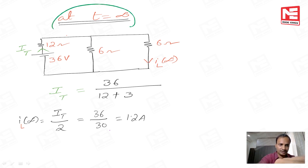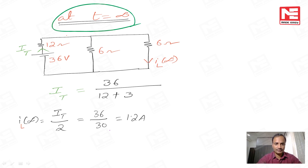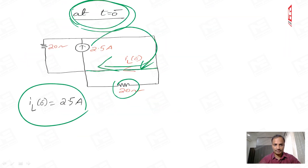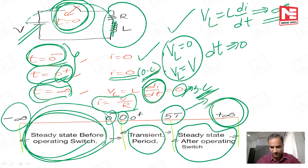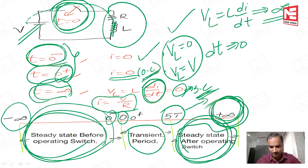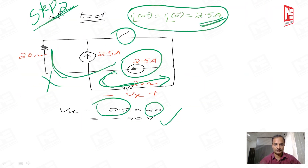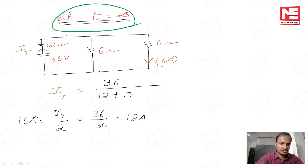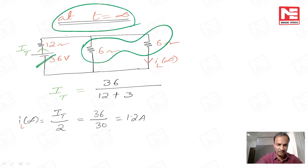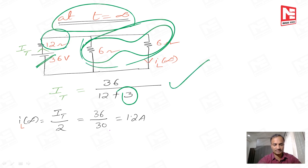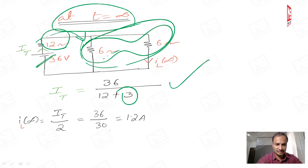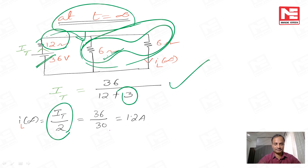Next, find the equivalent circuit at t equal to infinite. When asked for the complete response, find both the initial value and the final value. At t equal to infinite, it is the steady state condition after operating the switch. For the DC source, the inductor behaves as a short circuit. The 6 ohms and 6 ohms are in series with the source, giving the total current. This total current is equally distributed between the two parallel 6-ohm resistors, giving the final current value.